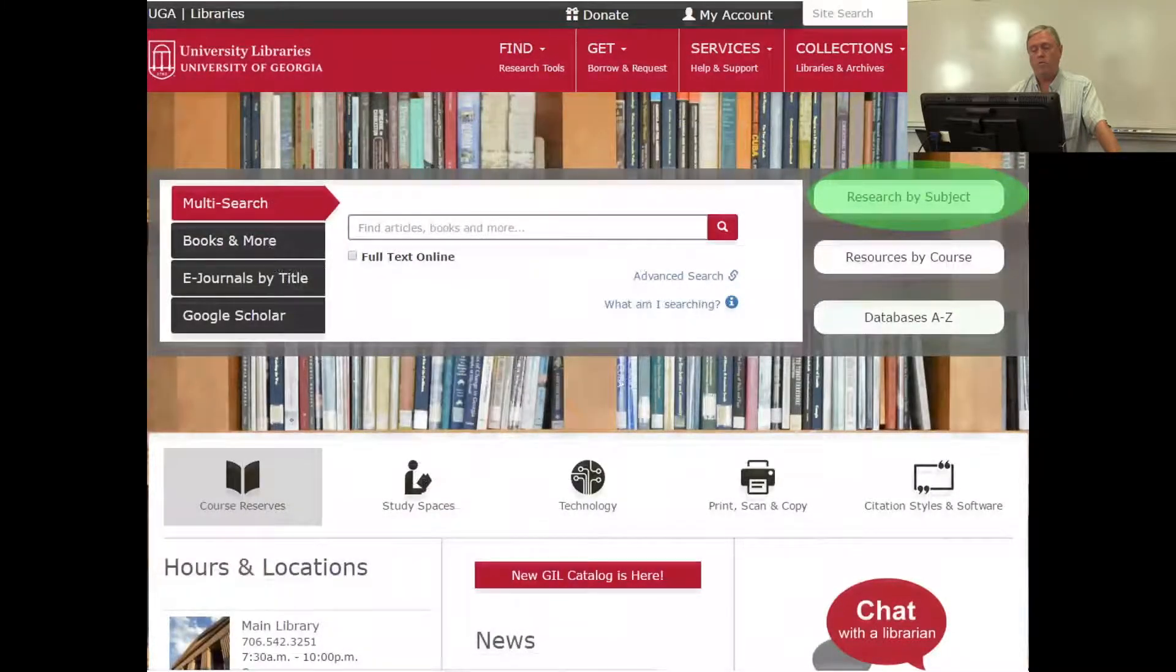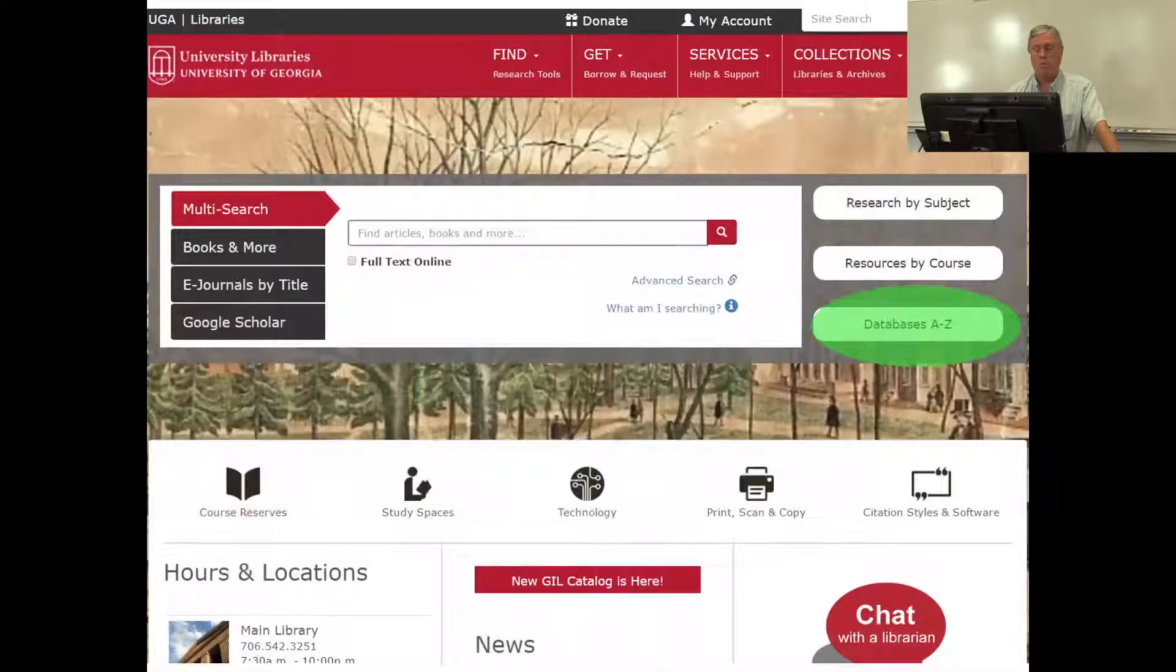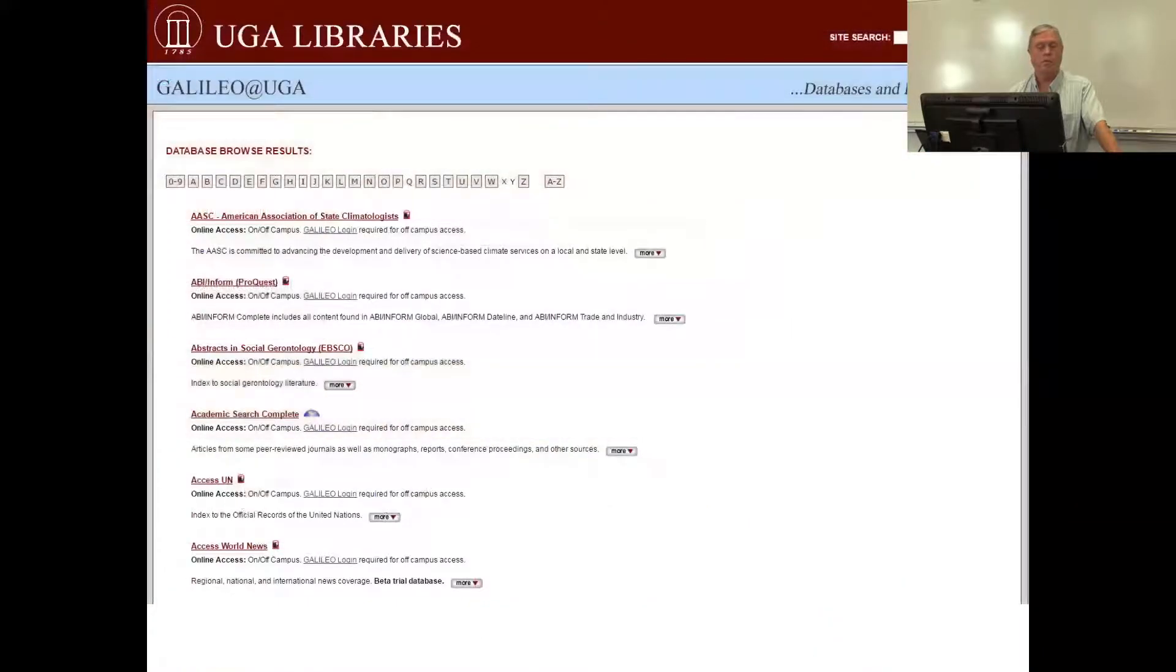If you already know the database you want to use, just go to databases A to Z. It will give you a listing of over 600 electronic databases, and just scroll down to the one that you want.